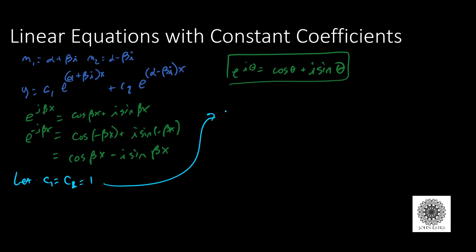For my general solution I get y equals e to the alpha x times e to the beta ix plus e to the alpha x e to the negative beta ix, because a plus exponent means times: e to the alpha plus beta means e to the alpha times e to the beta.